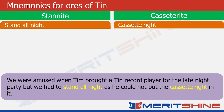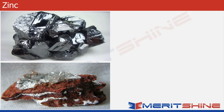Let's try to recall: stand all night gives us stannite, cassette right gives us cassiterite. With this we can move to zinc.